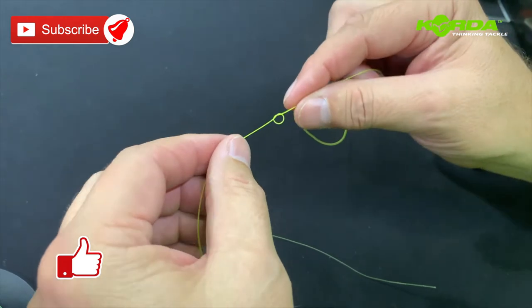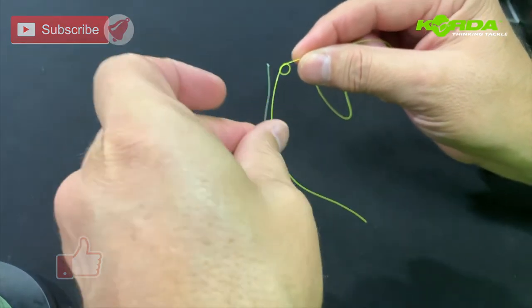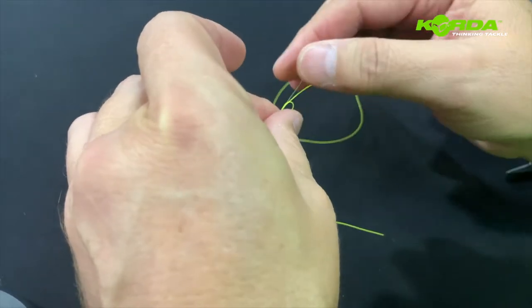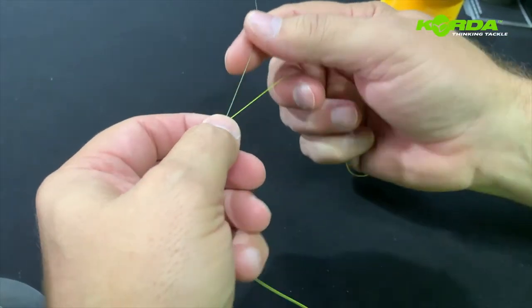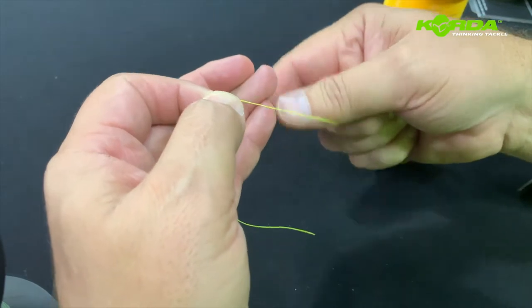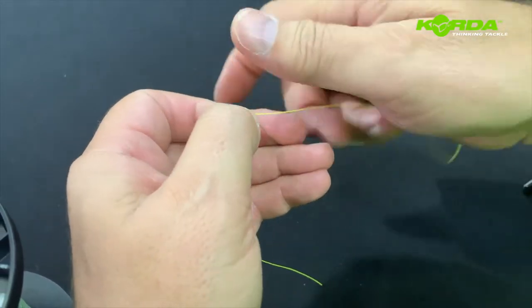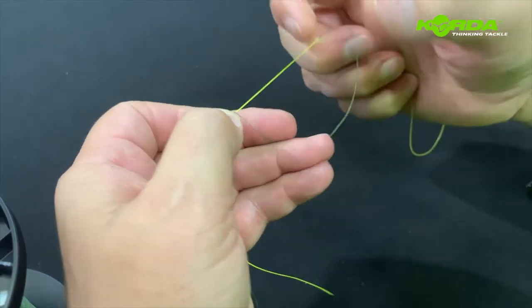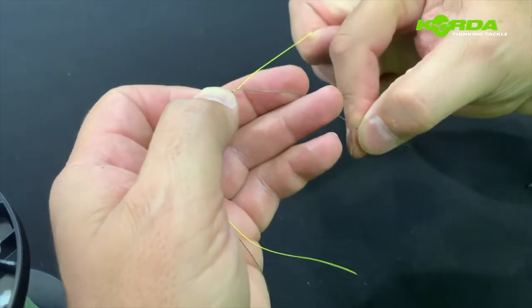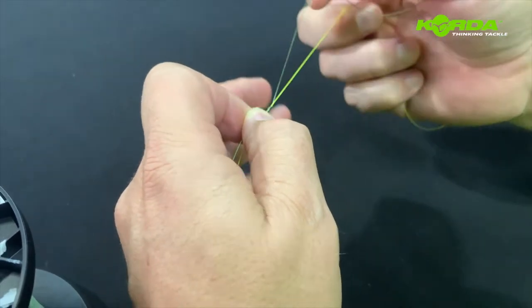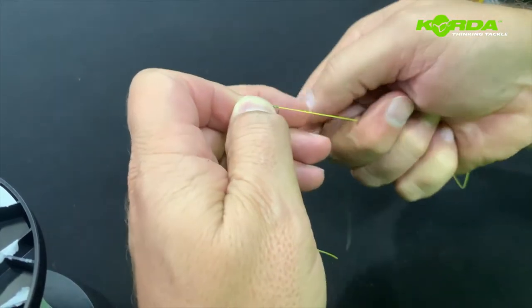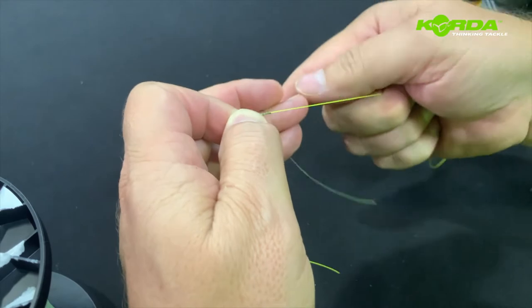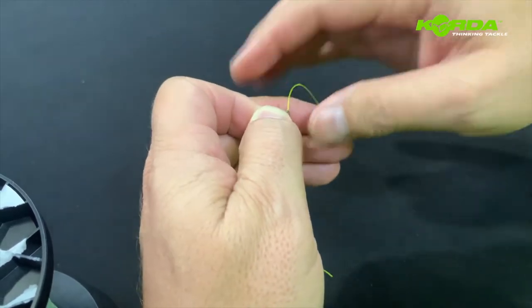And then I take my leader line and I push my leader line through that granny knot loop. Now all I do, I grip that whole lot like that and I go around once, twice, three, four, five, six, and seven. Then I wind back.